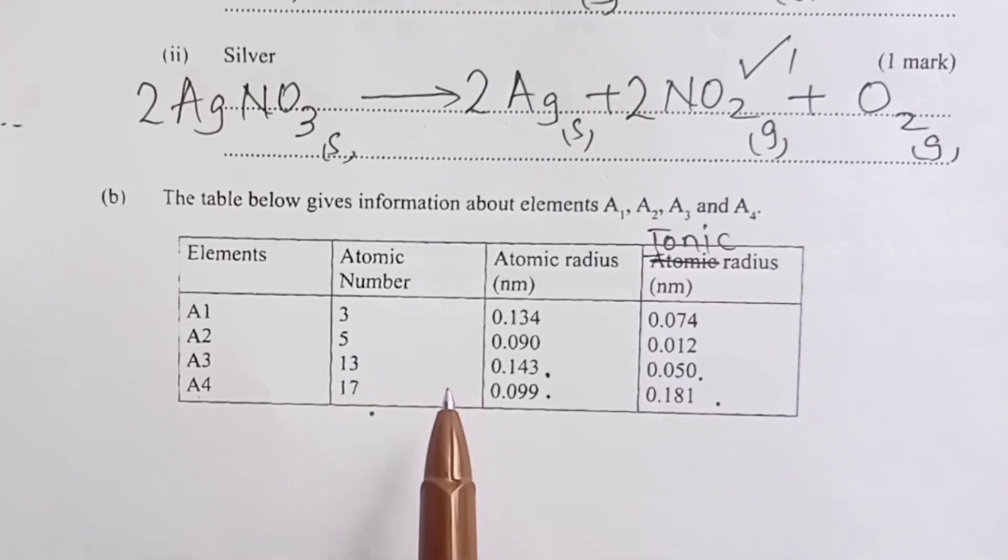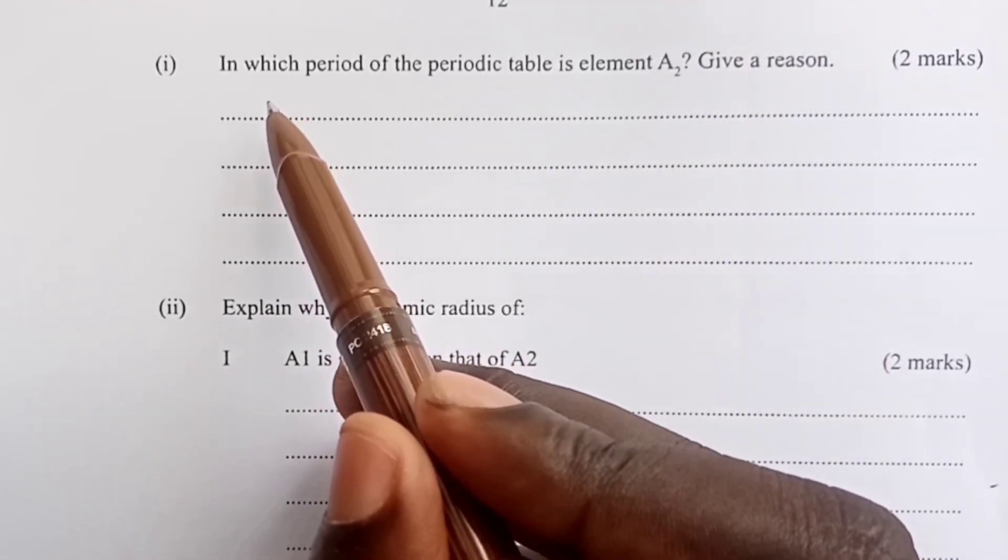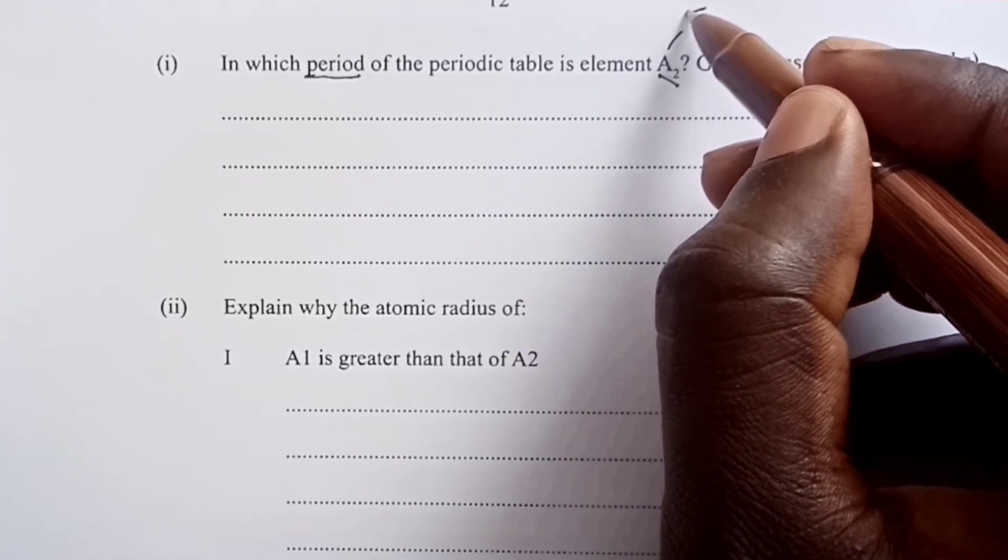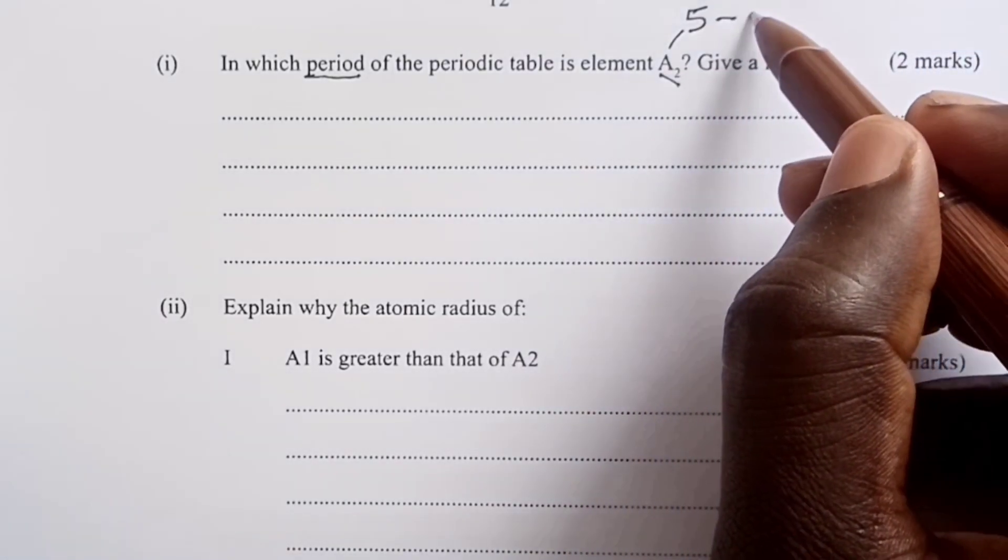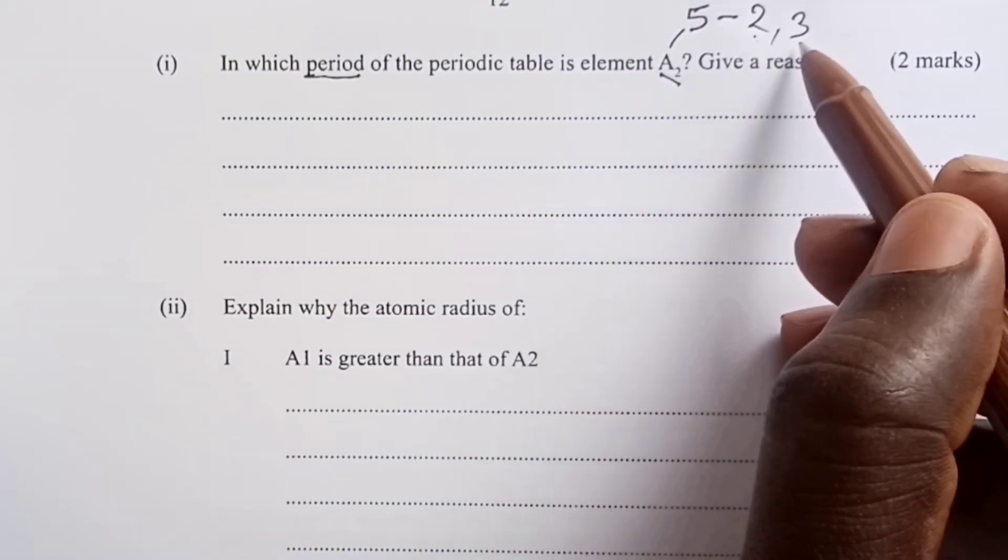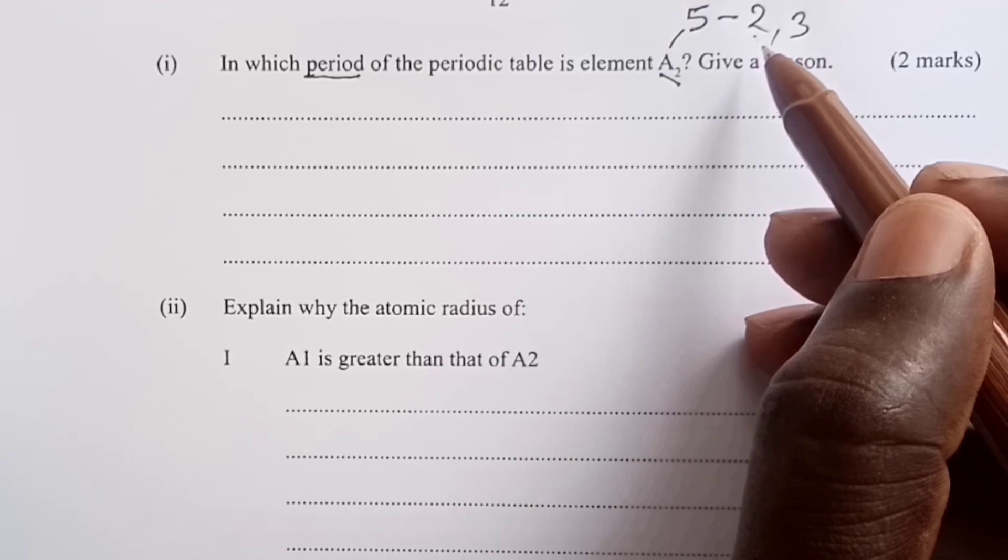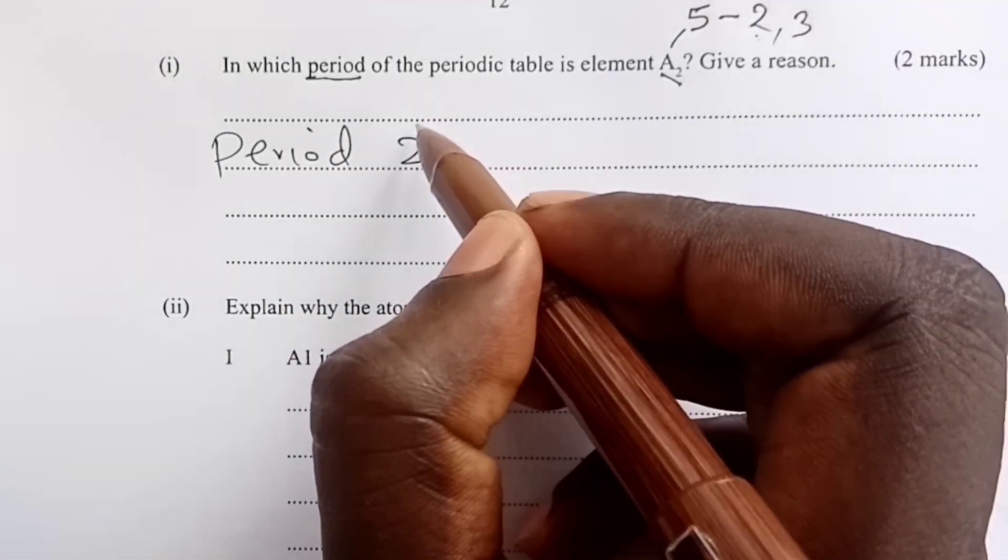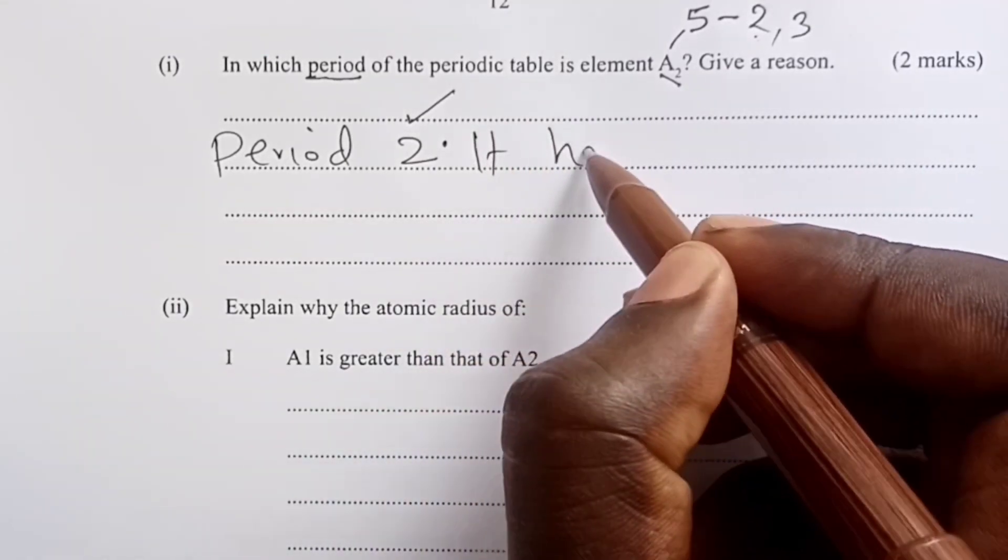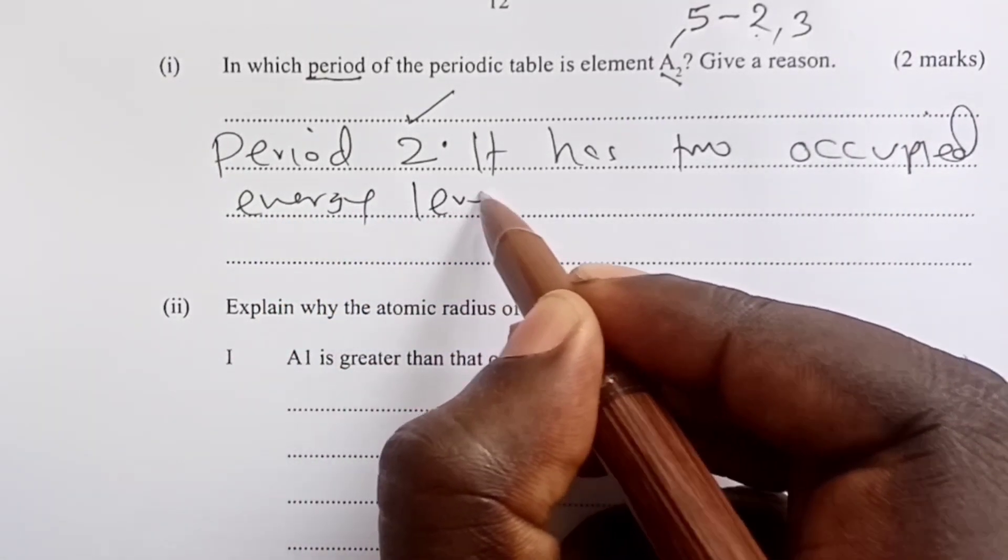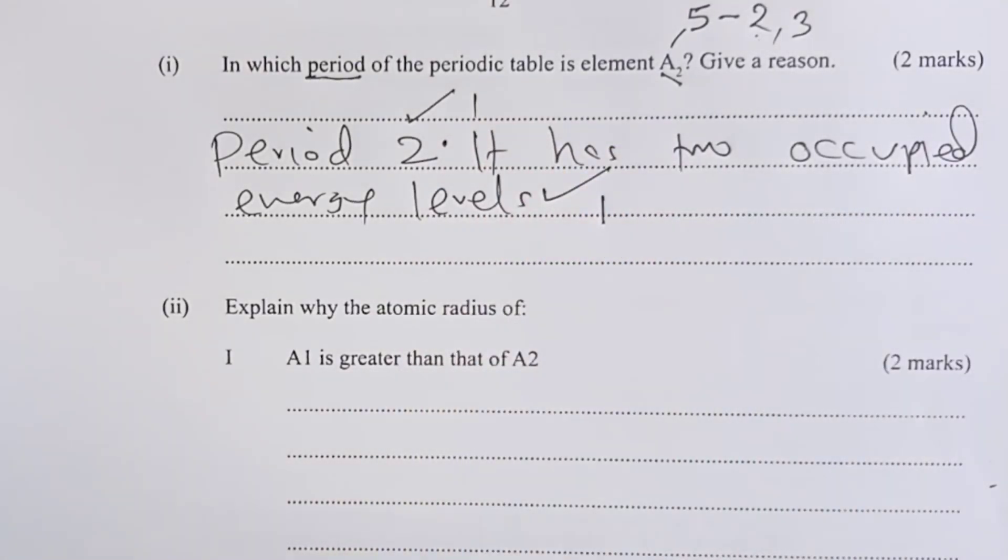Having mastered that, let us now proceed to answer the questions. The first question: in which period of the periodic table is element A2? Element A2 has atomic number 5, so its configuration is 2,3. Period is given by the number of occupied shells. We can see A2 has 2 occupied energy levels and therefore it belongs to period 2 for the first mark.